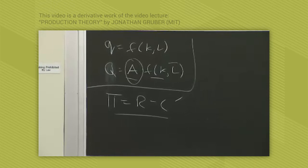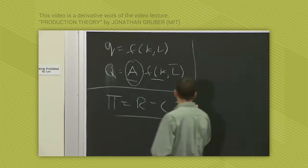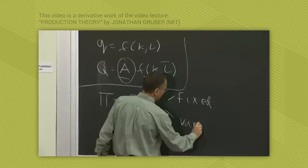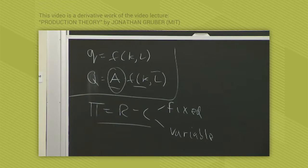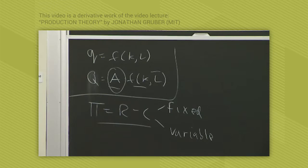The first component - costs are going to have two major components: fixed costs and variable costs. Fixed costs are the costs of inputs that cannot be varied in the short run. Remember I said that the short run is defined as a period over time in which only some inputs can vary. Fixed costs are the costs of those inputs that can't vary in the short run.